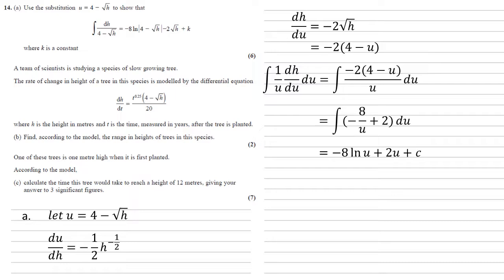But we need to replace our u because we need everything in terms of h, so putting u equals 4 minus root h back in, we get minus 8 log natural 4 minus root h plus 2 lots of 4 minus root h plus c. The log natural part is how we need it to be. Let's expand the second bracket now, so that becomes 8 minus 2 root h.